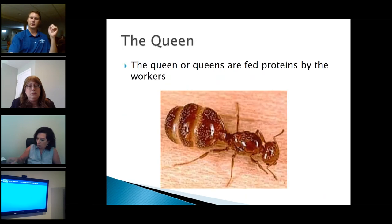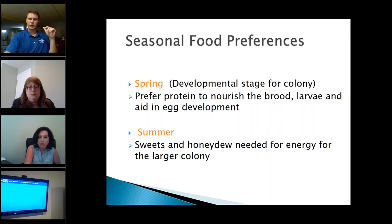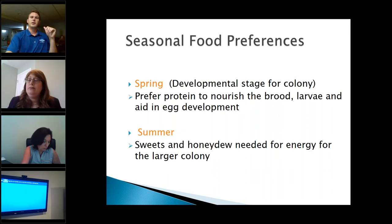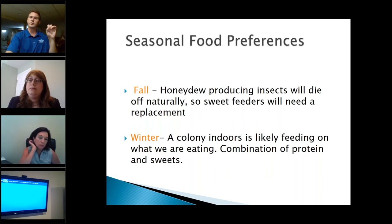The queen ant prefers protein in the spring because she needs it to nourish the brood and lay eggs — that's the queen's job. In the summer, she's more interested in sweets such as honeydew, which is really what the colony is more interested in. In the fall, honeydew-producing insects die off naturally, so sweet feeders will need a replacement. In the winter, a colony indoors is likely feeding off what they stored up. Inside the colony, as we discussed, there's a caste system: workers, larvae, queens, and males. Colony propagation and dispersal rely on nest structure and communication.